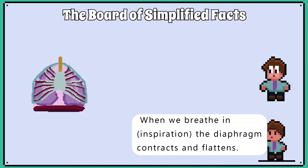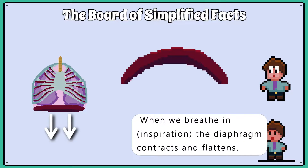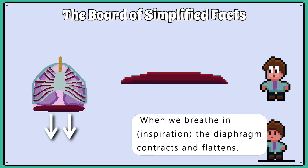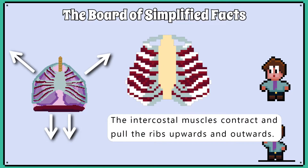When we breathe in — inspiration — the diaphragm contracts and flattens. The intercostal muscles contract and pull the ribs upwards and outwards.